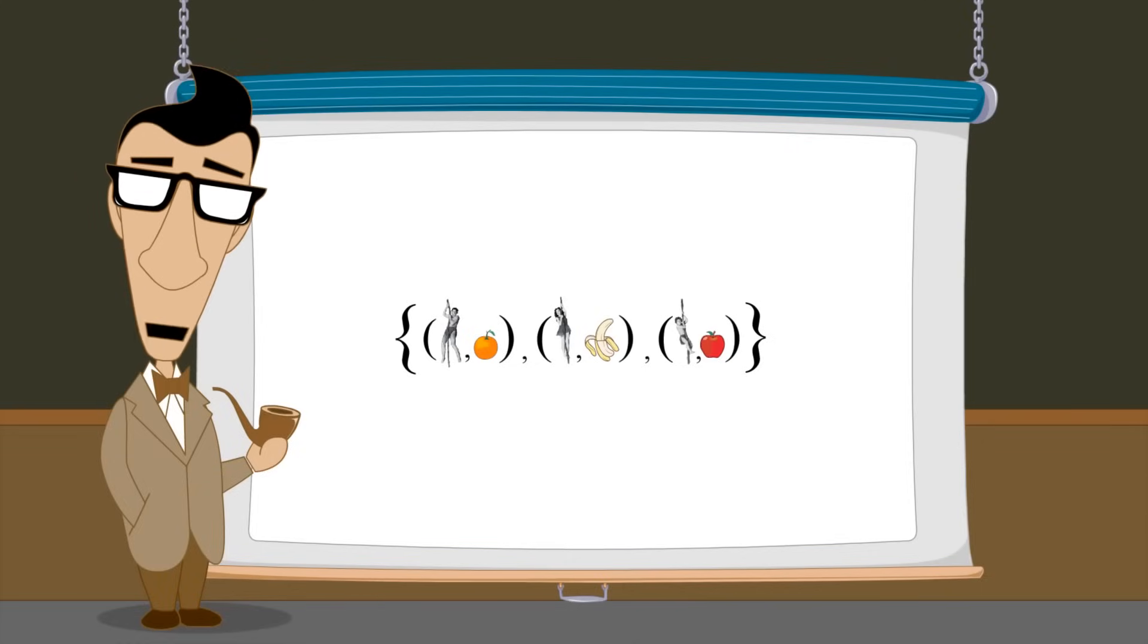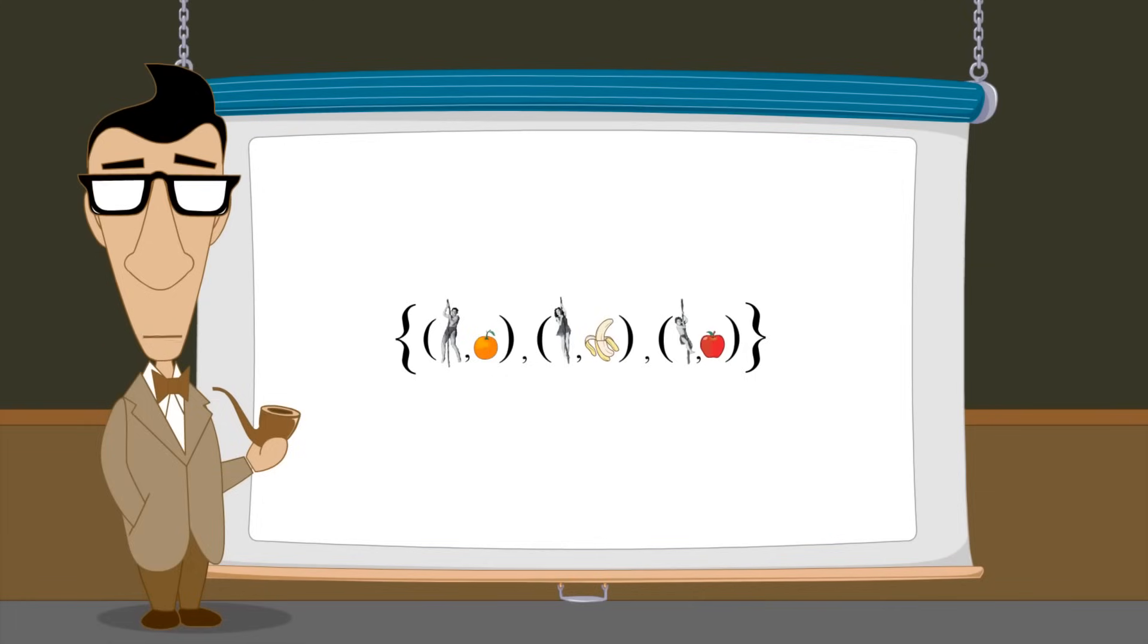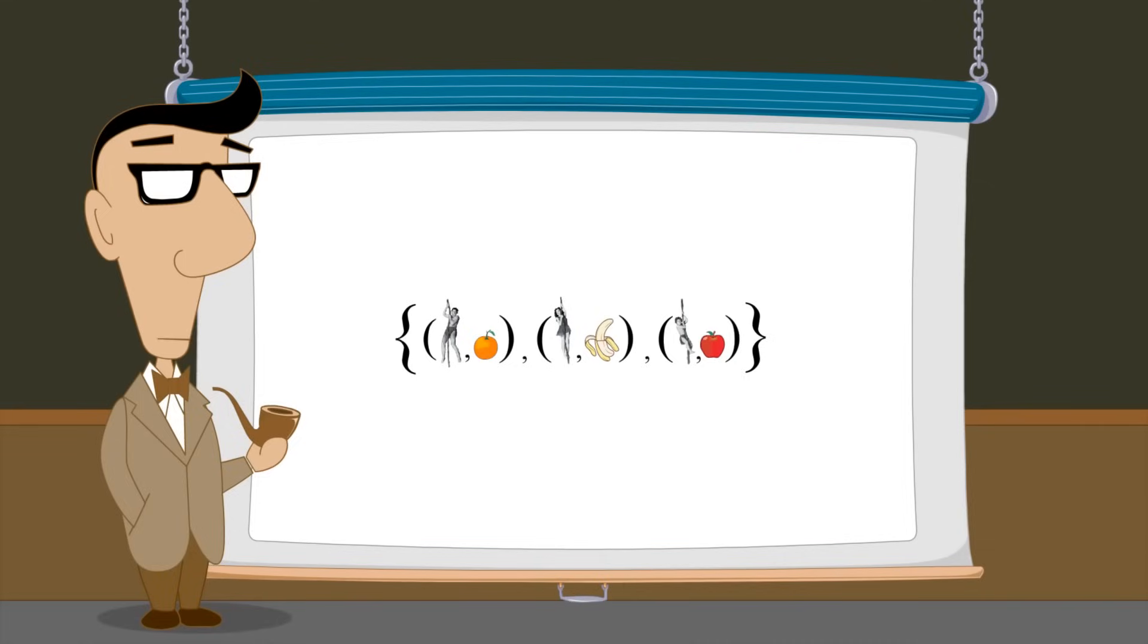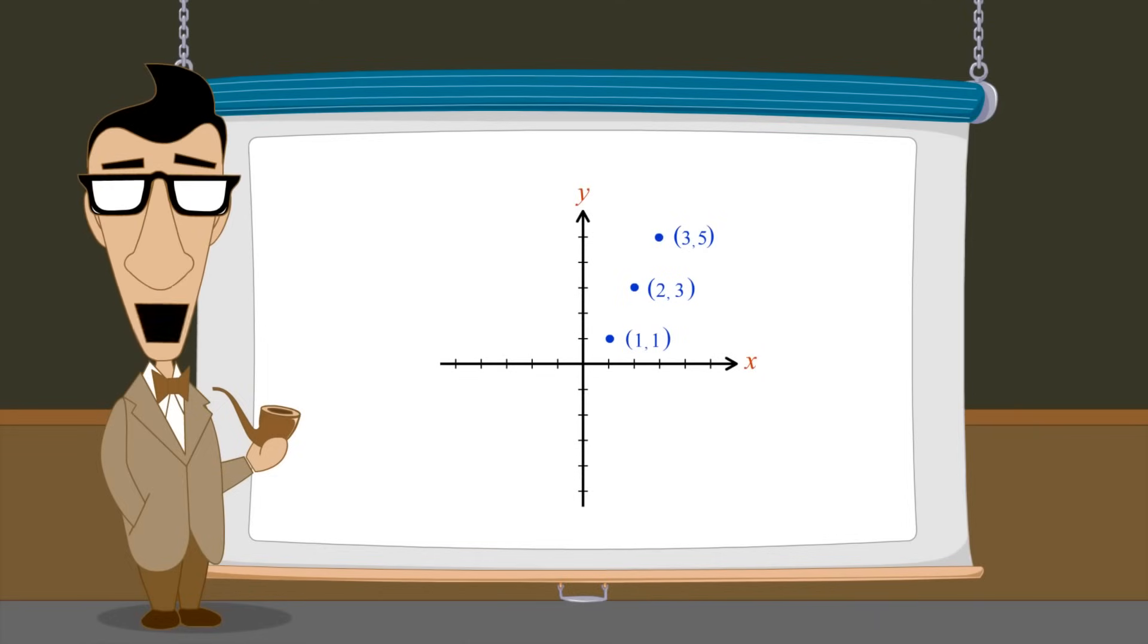However, in algebra a function's domain and range are typically sets of real numbers. Therefore, its graph will be ordered pairs of real numbers, which can be represented as points on the Cartesian plane. In the next lecture, we will take a closer look at these numeric functions and their graphical representations.